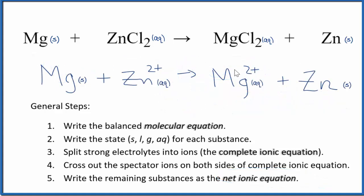This is the balanced net ionic equation for magnesium plus zinc chloride. Note that the charge is the same on both sides. In the reactants, we have 2+ and in the products, 2+, so charge is conserved. If you count the atoms up, they'll be the same as well.